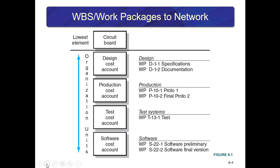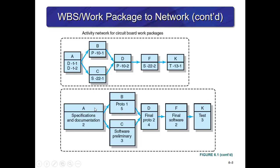This diagram illustrates how the WBS transfers to a network. It shows the lowest element, the circuit board, and all the different organizational units involved in that particular work package. The next slide shows the network diagram of activities A, B, C through D, F, and K, showing that A is an activity that involves D1-1 and D1-2. The work package rolls up into the network diagram.